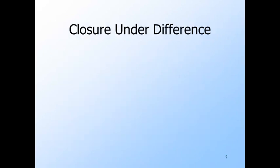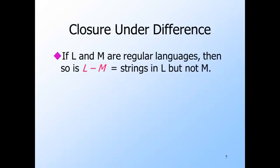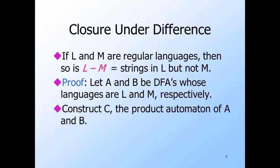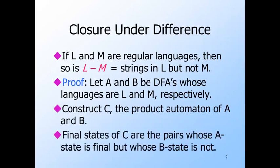Set difference is another operation under which regular languages are closed. The difference of languages L and M, written L minus M, is the set of strings in L that are not in M. For the proof of closure under difference, start with DFAs A and B for languages L and M respectively. Construct C, the product automaton for A and B. Make the final states of C be the pairs where the state from A is final and the state from B is not. Then C accepts an input string W if and only if A accepts W but B does not — that is, W is in the difference of their languages.